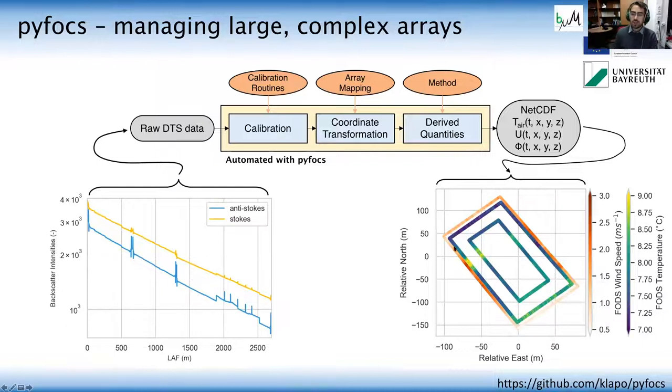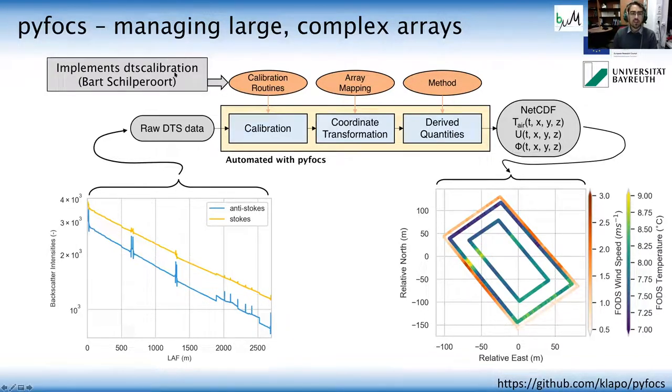And so you can kind of see then that this is interesting shapes in here. And actually I'll be talking about this feature in a second. But within this tool, we can also then output additional drive quantities such as wind speed and wind direction, which will be soon be added. And I just want to shout out to the DTS calibration tool that Bart Schilpelroot will be talking about later as it forms kind of a powerful backbone for our own work here.